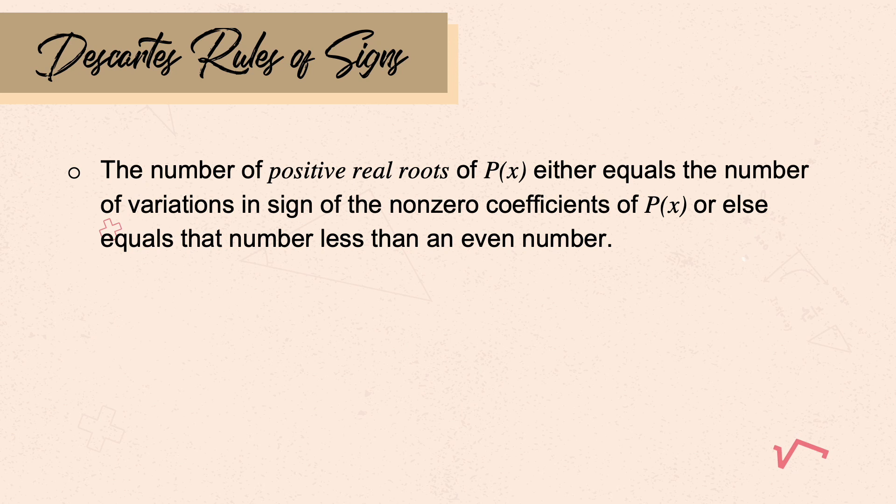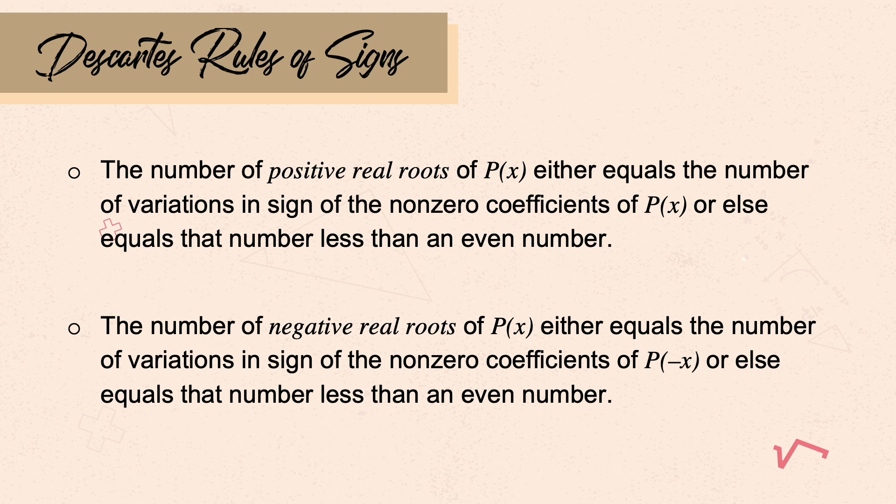However, you should stop when the result, after subtracting by 2, becomes negative. Then, to identify the negative real roots, that equals the number of variations in sign of the non-zero coefficients of p of negative x, or else equals that number less an even number. So this time, we work with p of negative x.